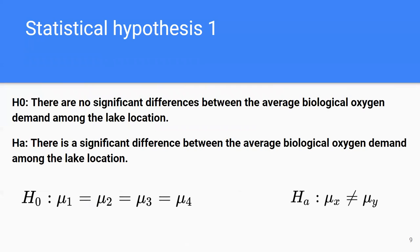Now Gary will explain the statistical hypotheses. The first one is that there is no significant difference between the average biological oxygen demand among the lake locations. It is a comparison of means — the null hypothesis states there is no difference, and the alternative states that at least one is different.